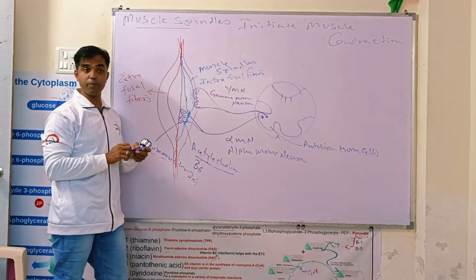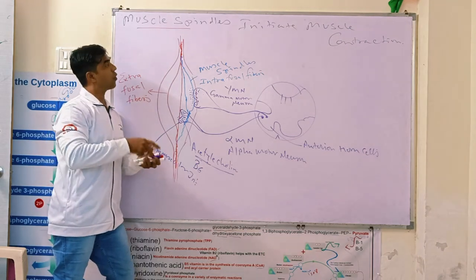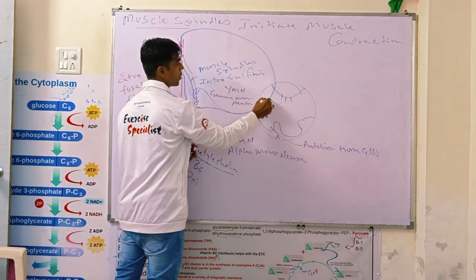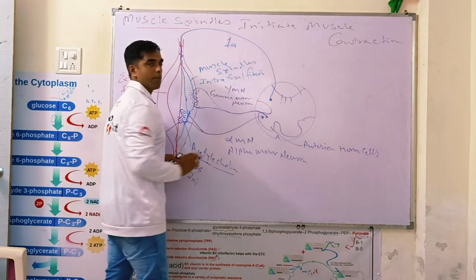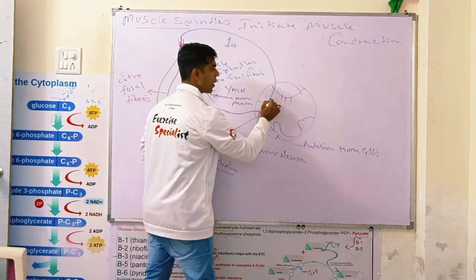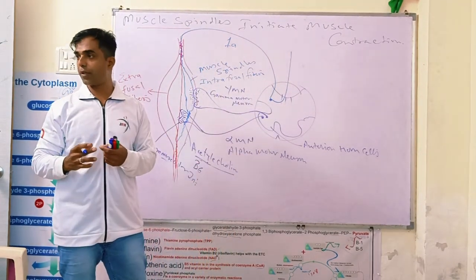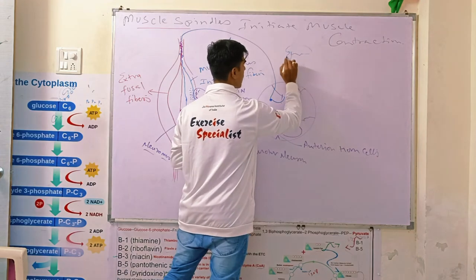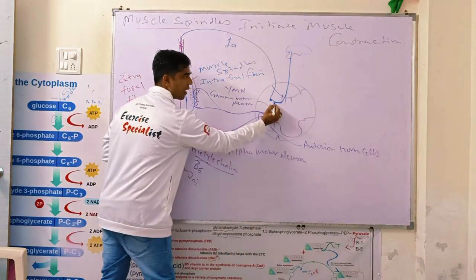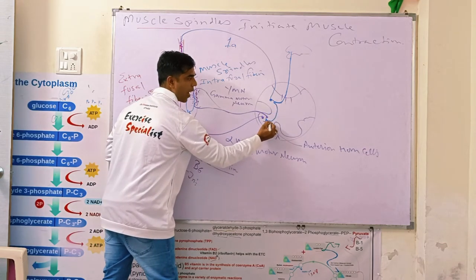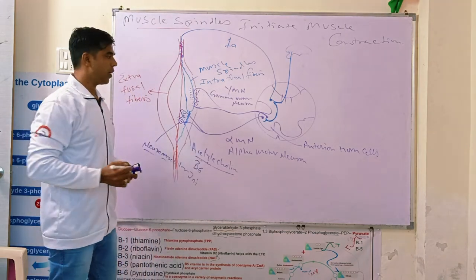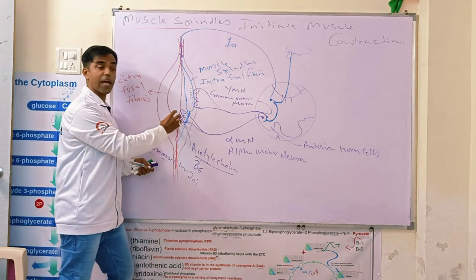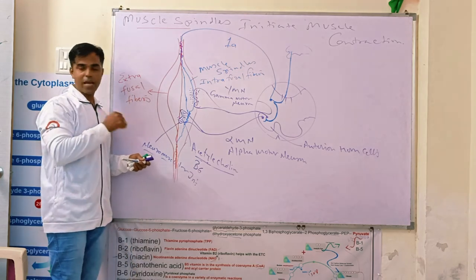And this muscle spindle will take the information to the spinal cord via the 1A fiber, as proprioceptive information to the central nervous system. We will then come back and relay contractile information via an interneuron. And now, once the alpha motor neuron receives the action potential, it will release acetylcholine for all extrafusal fibers, and the muscle will contract.